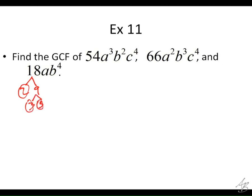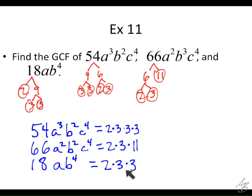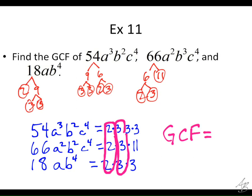Last one. Start with factor trees. 54 — what do I multiply to get 54? 9 times 6. So I've got the factor trees done. Next we write the prime factorizations. Here are the prime factorizations for the number parts; we're going to use the shortcut for the variables. What numbers do they all have in common? A 2 and a 3 — I see a 2 on all of them and a 3 on all of them. So the GCF number part is 2 times 3, which is 6.